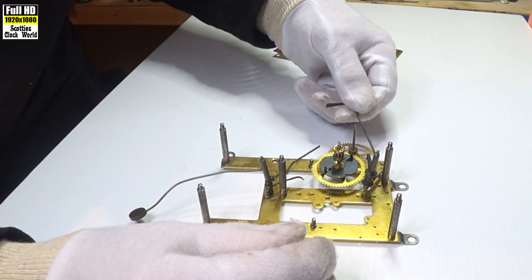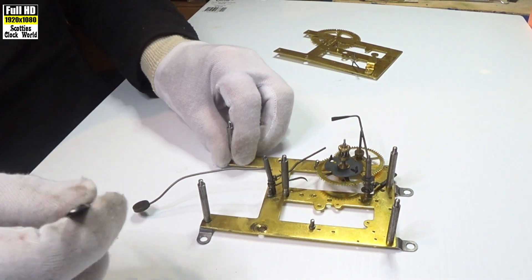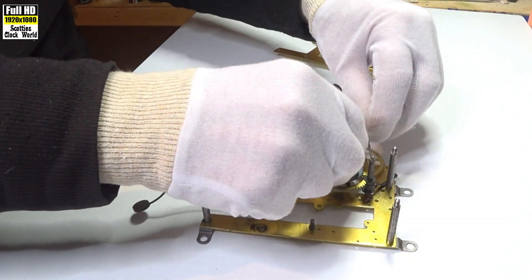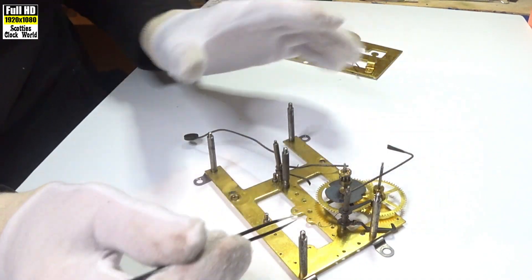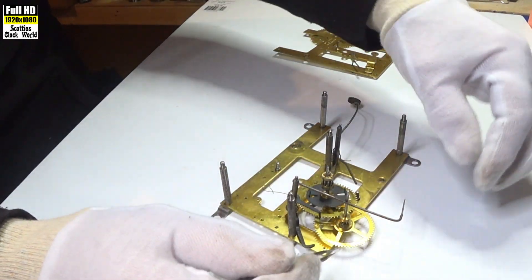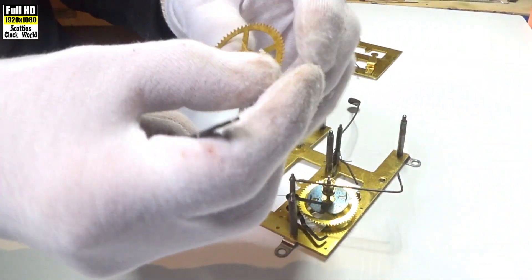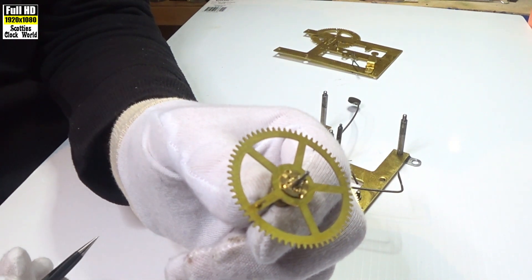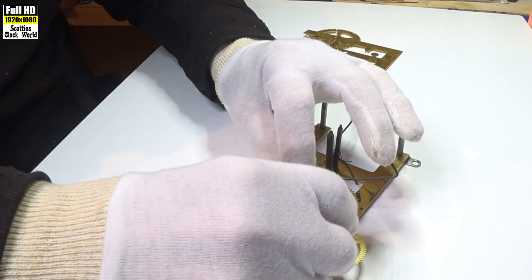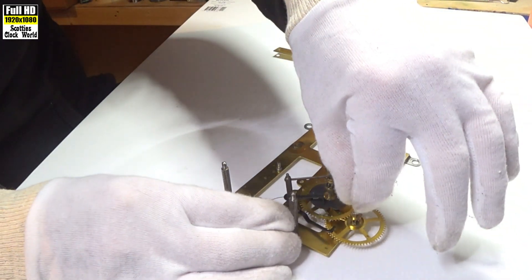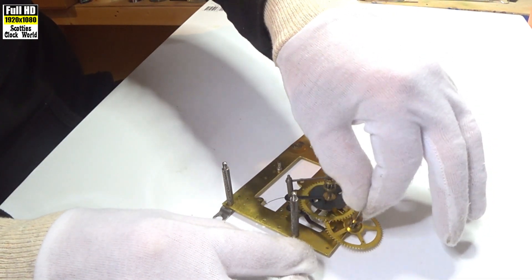The second one, I'll put that back in again, lines on the maintenance cam. The third one, I'll move that over, arrests the motion on the warning wheel by catching that pin. Put that back in again.